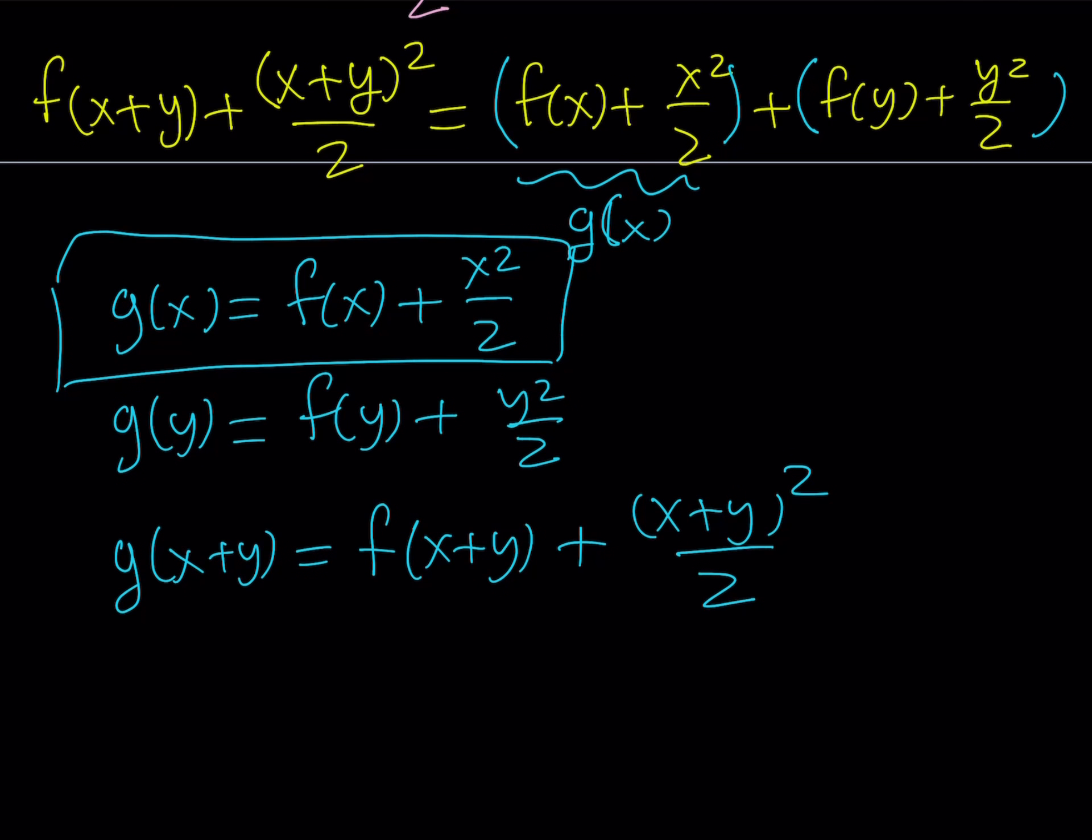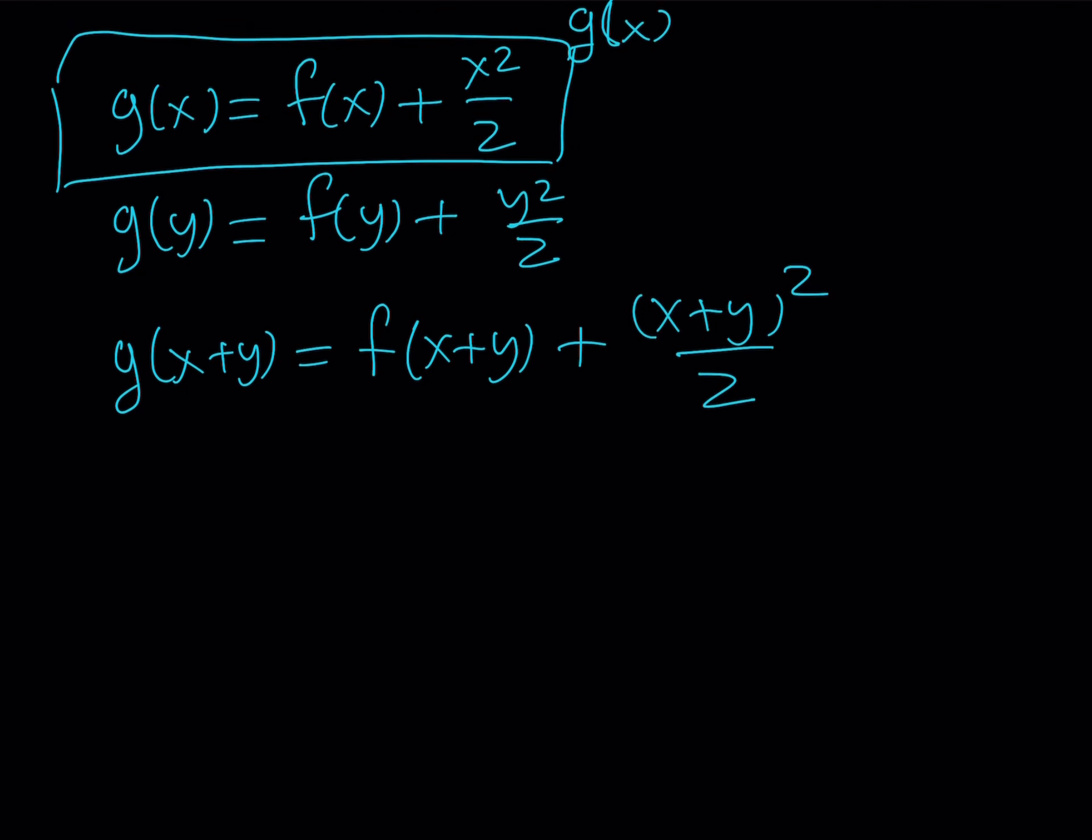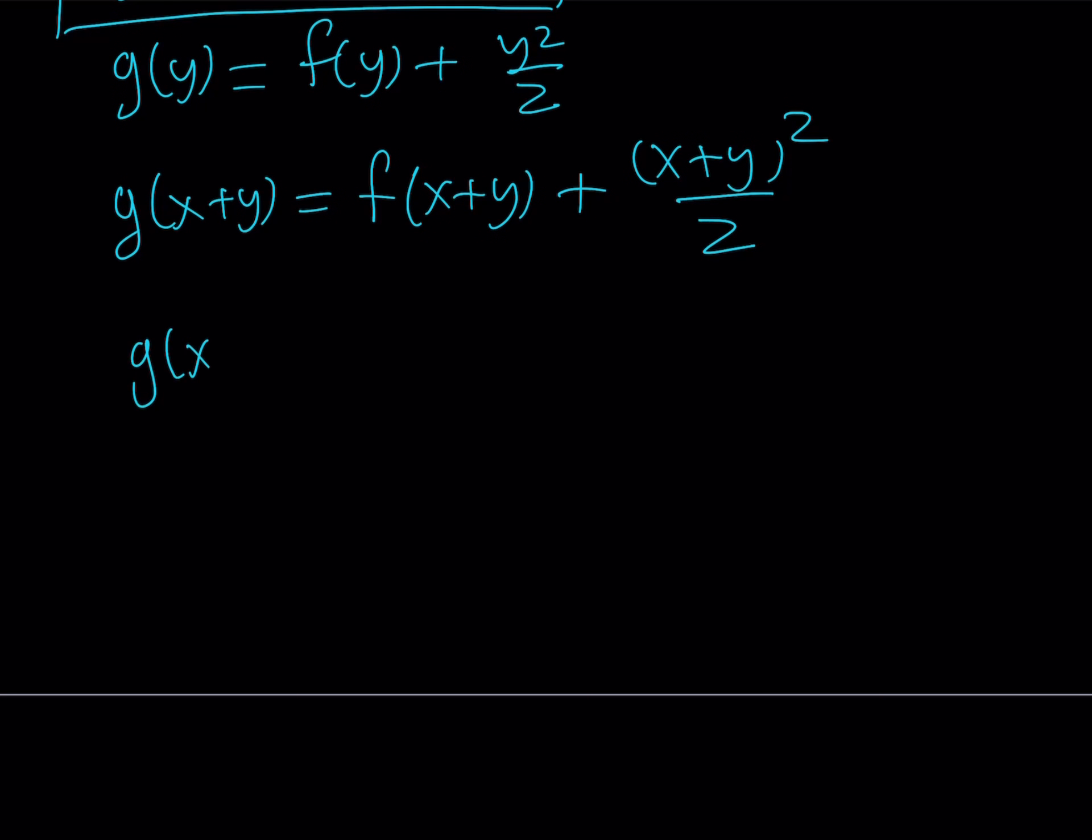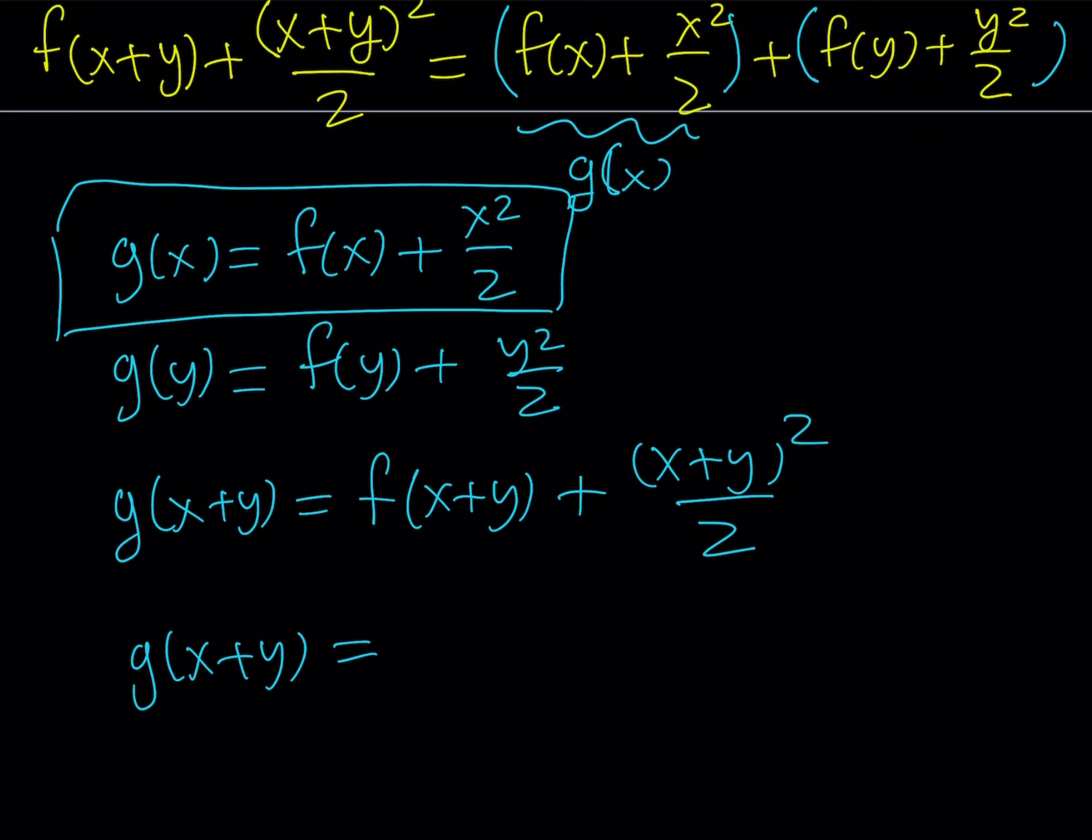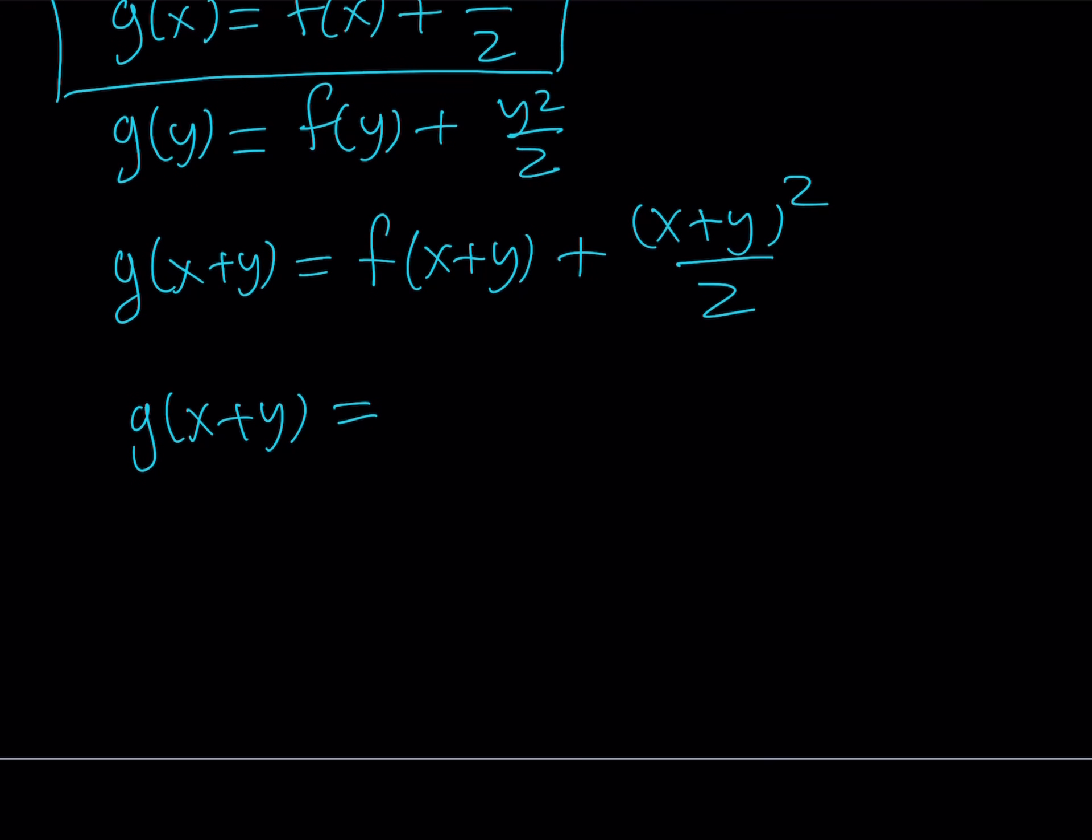Great. Now, let's go ahead and substitute everything into our equation. The left hand side becomes g of x plus y. And I think you know why. The right hand side is made up of two pieces, g of x and g of y. So it looks like this. Now, this is one of Cauchy's functional equations, remember? A very easy function to solve. And how can I solve it?